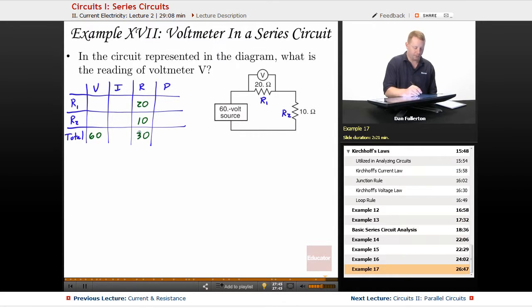I equals V over R. This must be 2 amps. That means that anywhere in our circuits, because it's a series circuit, we have the same current, 2 amps, 2 amps.